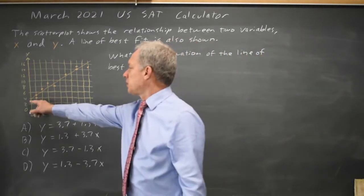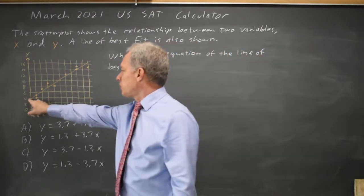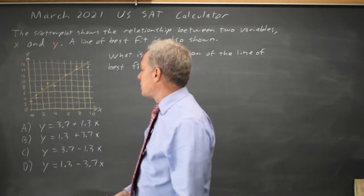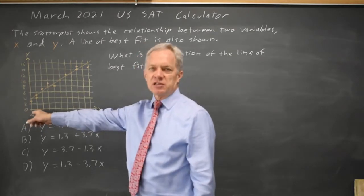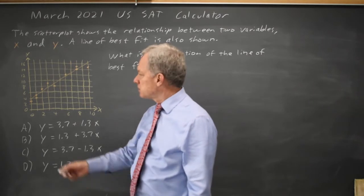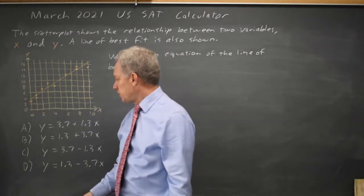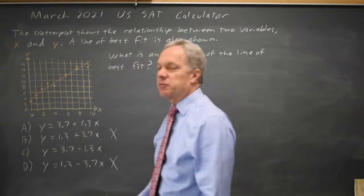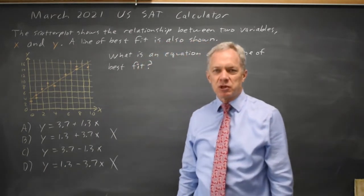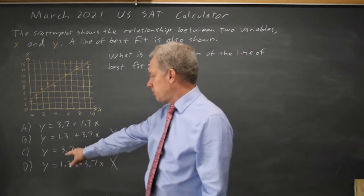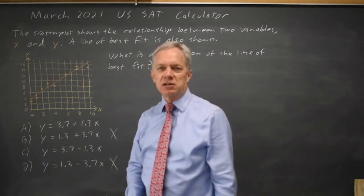We notice this line has a positive slope and a y-intercept just below 4. Always read their scales carefully. Sometimes the vertical axis on the far left will not be at x equals 0, but in this case it is, so we can read the y-intercept as a little less than 4. Choices B and D are not correct because their y-intercepts are 1.3 rather than just under 4. Choices A and C both have a y-intercept a little less than 4.